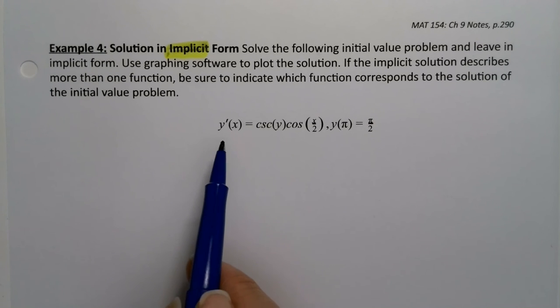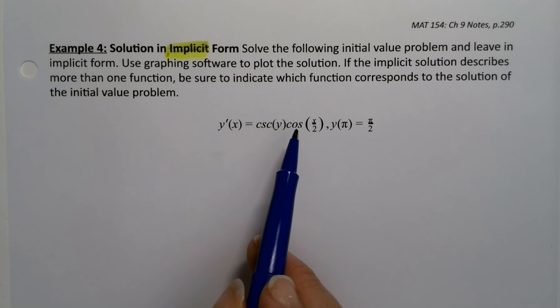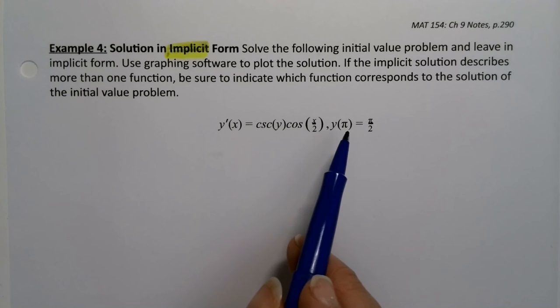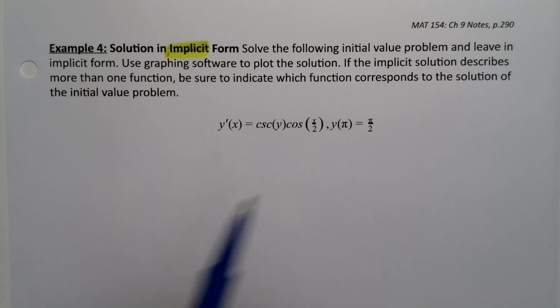All right, so I have y'(x) is equal to the cosecant of y times cosine of x over 2, and y of π is equal to π over 2.